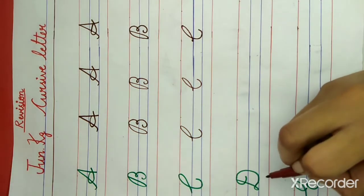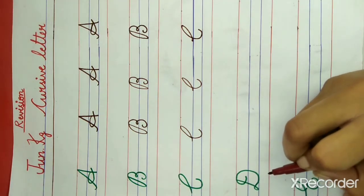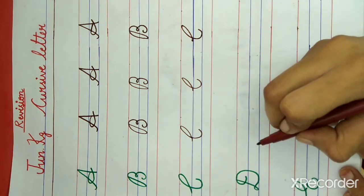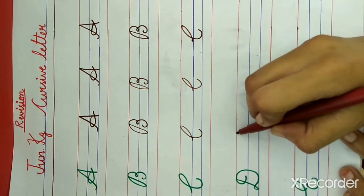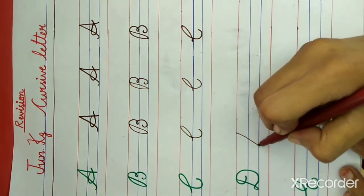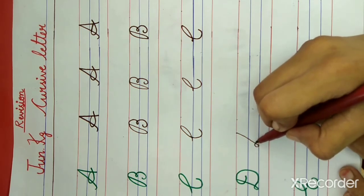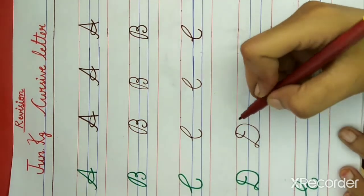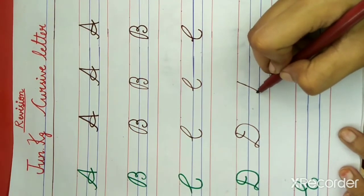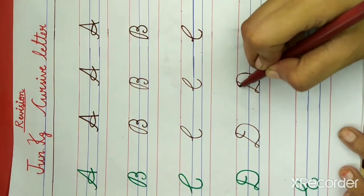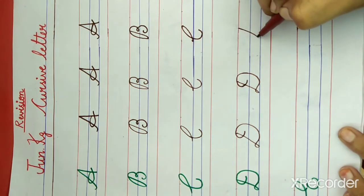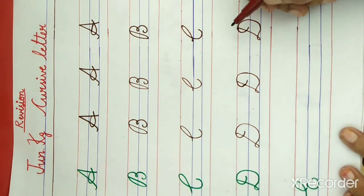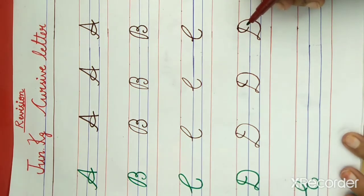Now what is this? This is letter D. D for duck. What is the spelling of duck? D-U-C-K. Duck. Now put your pencil on the red line and draw a slanting line, a small loop, a semicircle, and leave here. What is this? This is letter D. D for duck. What is the spelling of duck? D-U-C-K. You have to remember all the spellings of the words.